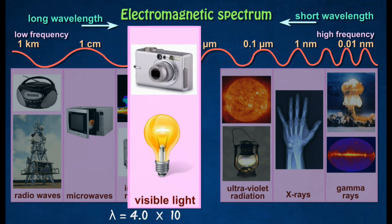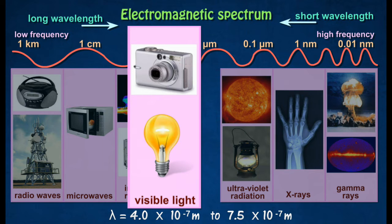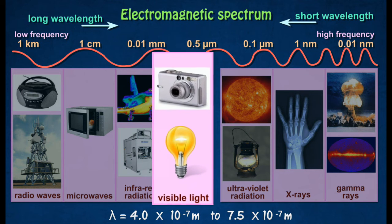Visible light enables the human eye to see objects, enables photographs to be taken, and causes photosynthesis in green plants. Light in optical fibers is used in medicine and telecommunications. Laser light is also widely used in medicine, engineering, and telecommunications.